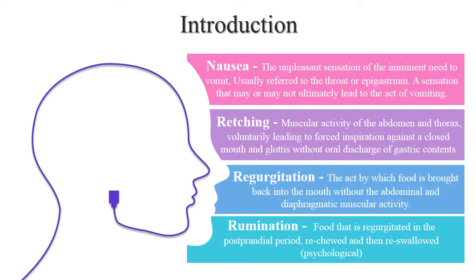We will discuss some terms related to vomiting. First one is Nausea. The unpleasant sensation of the imminent need to vomit is called Nausea. It usually refers to throat and epigastrium, or we can say a sensation that may or may not ultimately lead to the act of vomiting.